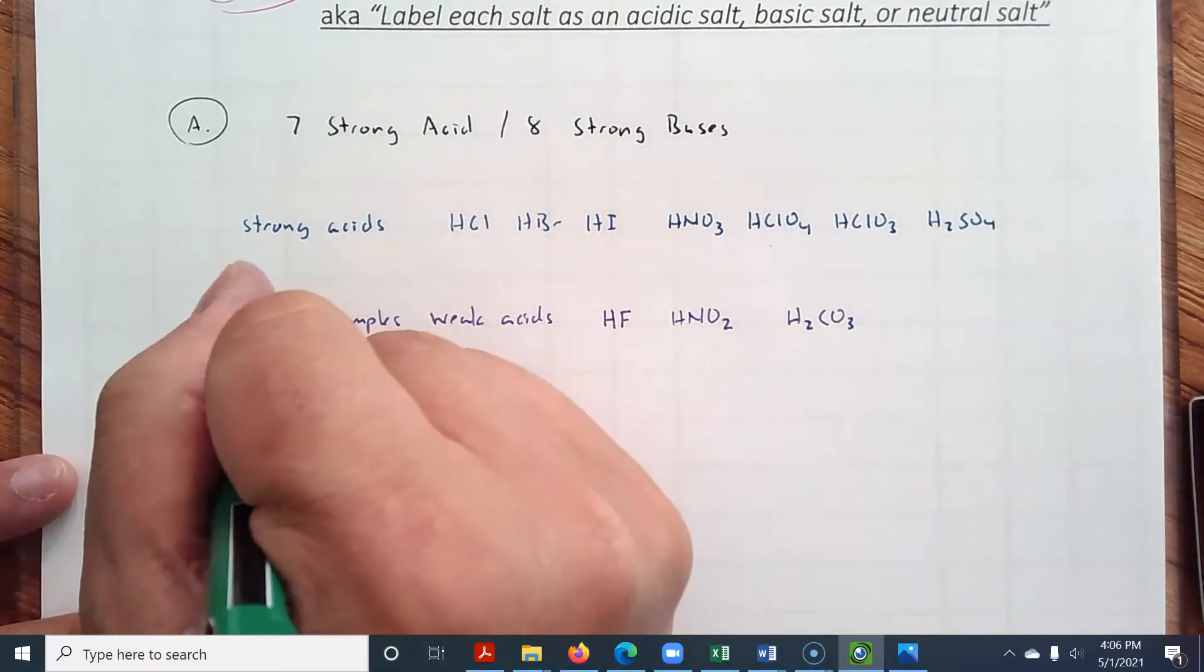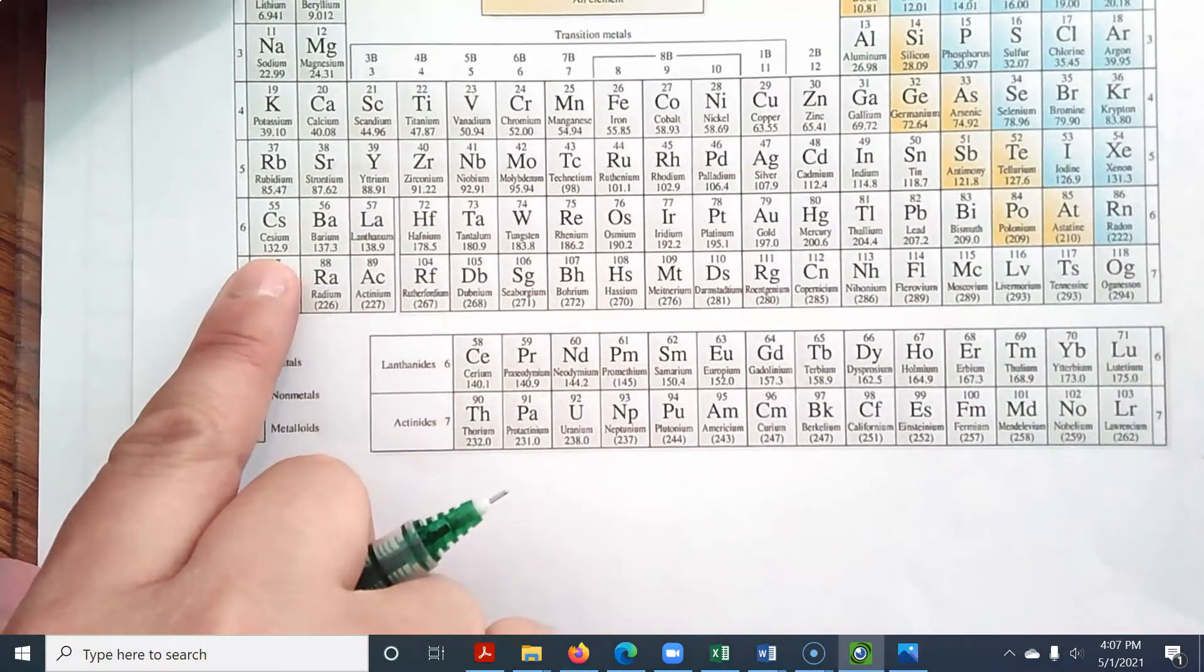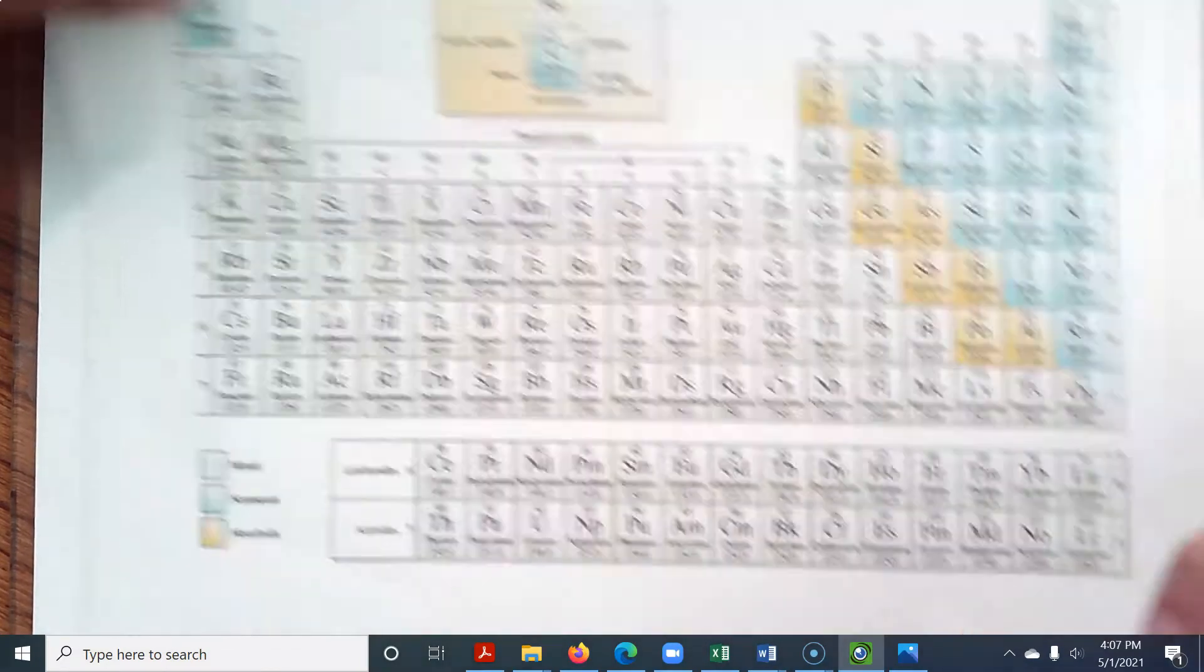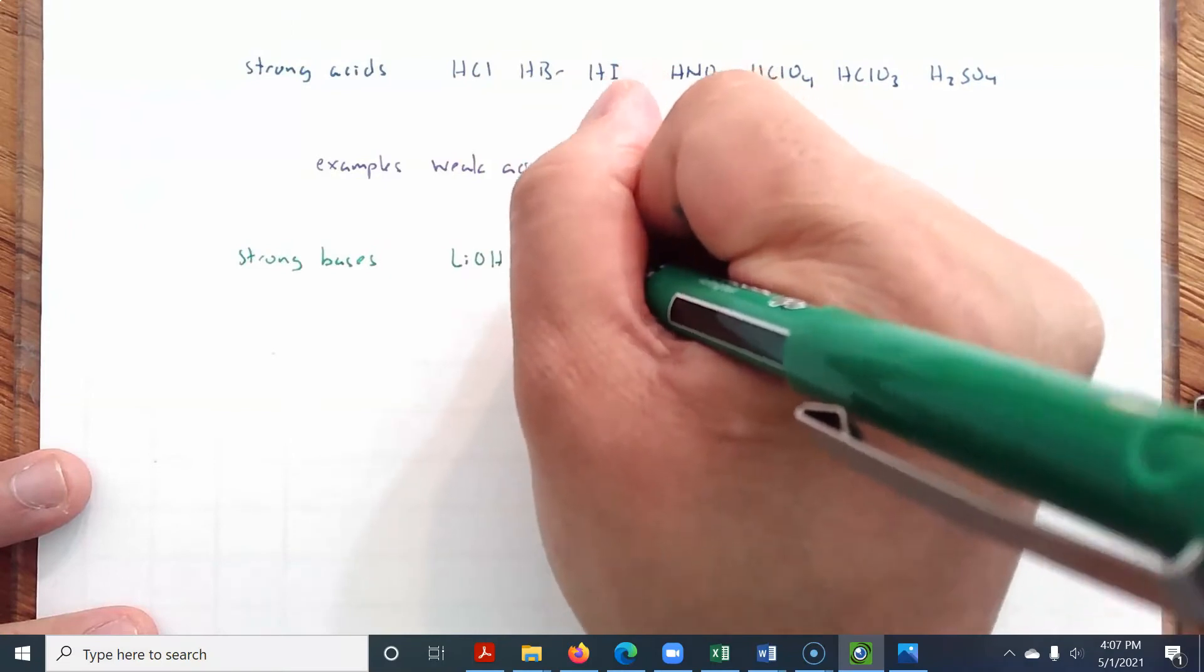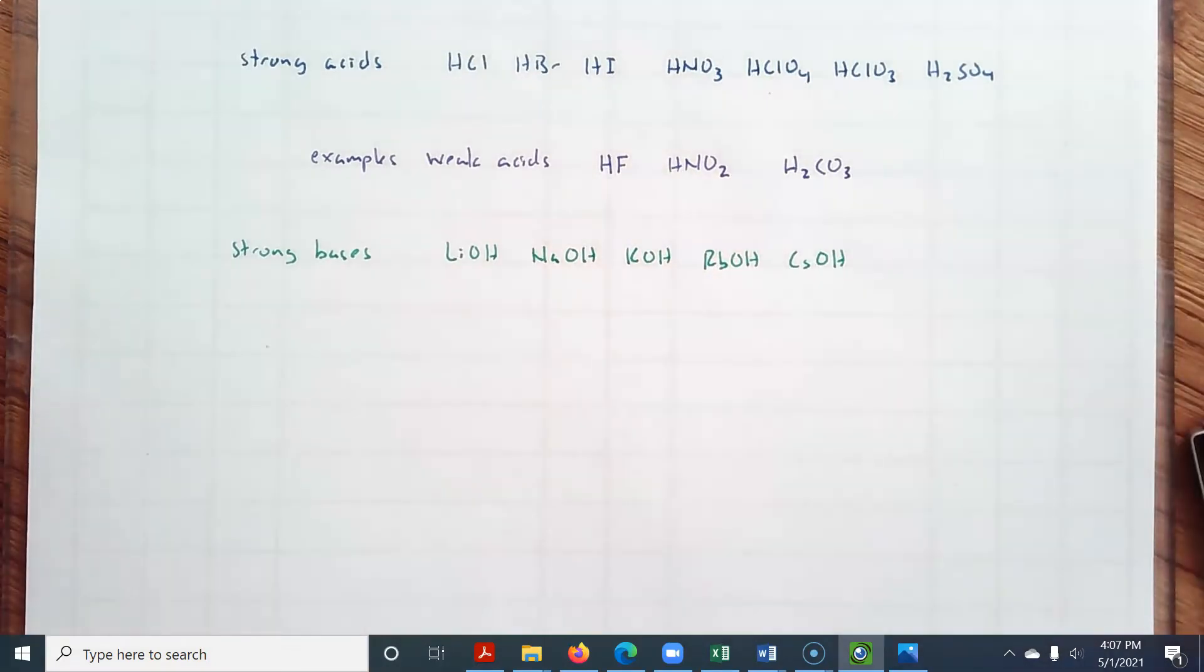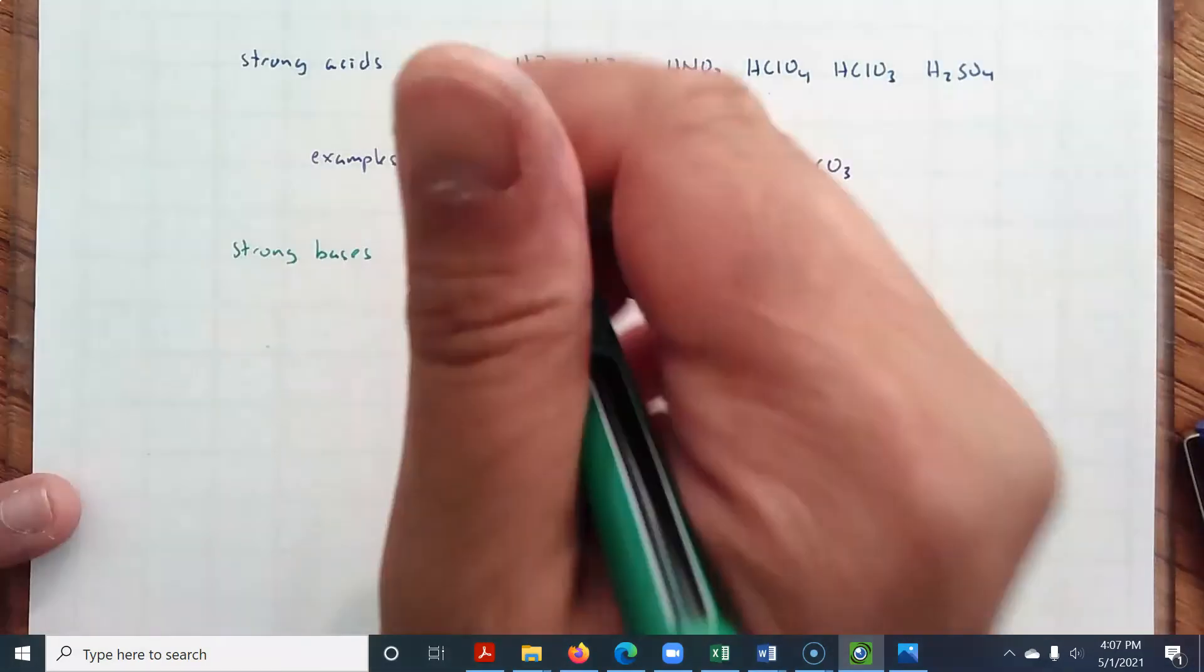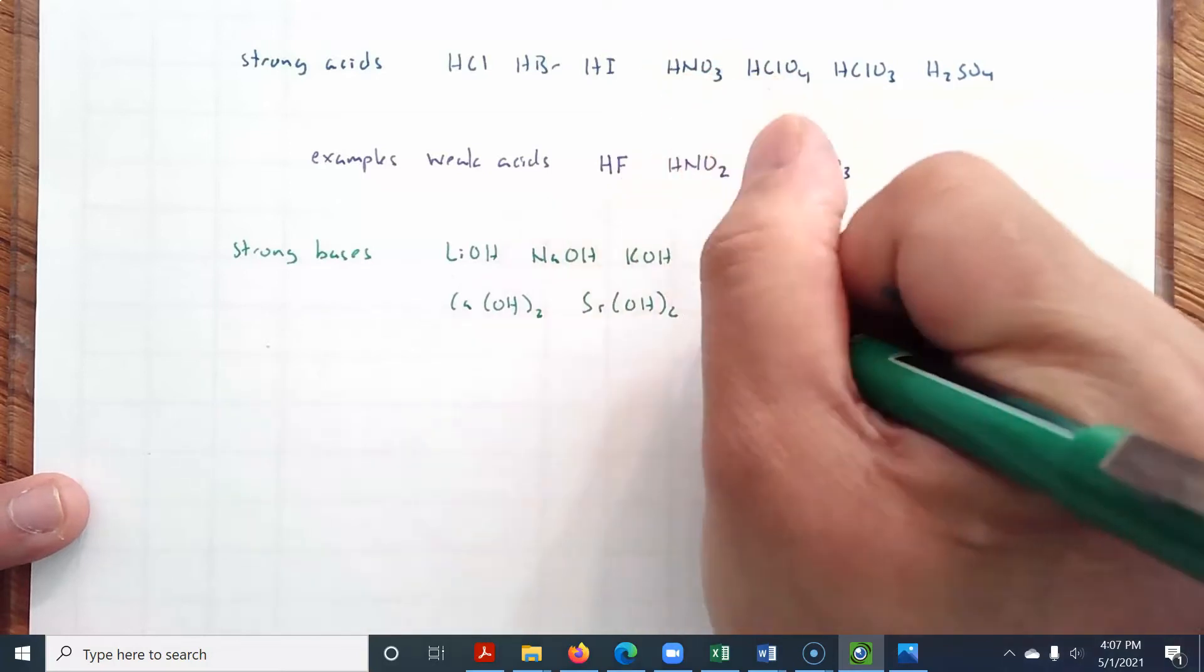What about the strong bases? Eight of them. Let's use the periodic table again as a guide. It's the group one hydroxides and the group two, but for group one, it's going from lithium to cesium, and for group two, calcium, strontium, and barium. LiOH, NaOH, KOH, RbOH, CsOH. Those are the group one hydroxides. The group two, again, you're skipping beryllium and magnesium, but definitely calcium, strontium, and barium are considered strong bases. Calcium hydroxide, strontium hydroxide, barium hydroxide.